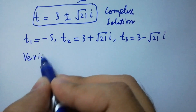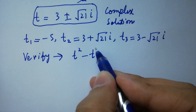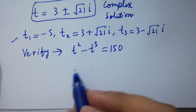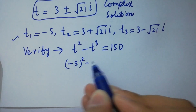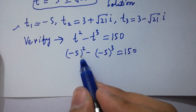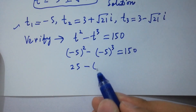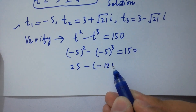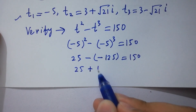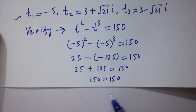In the next step I am going to verify t squared minus t cubed equals 150. Putting the value t equals minus 5: (minus 5) squared minus (minus 5) cubed equals 25 minus (minus 125), which equals 25 plus 125, which equals 150. This equals the right-hand side, confirming our solution.